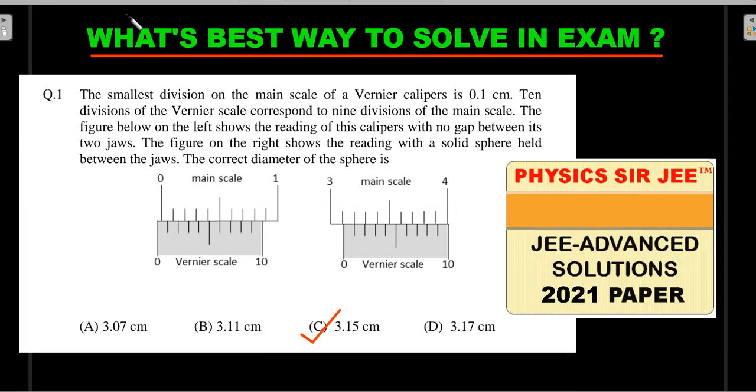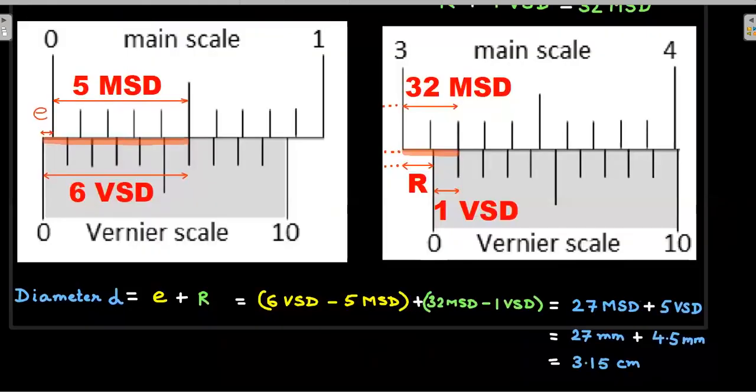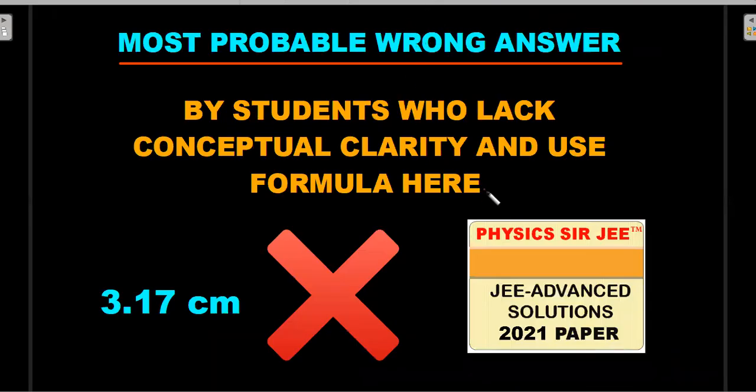So let me go back and mark the option that's supposed to be correct. This is the correct answer. A lot of students when they try mugging up the formula and then solve this, some of them actually answered it in my comments sections when the paper was released, answered it as 3.17.